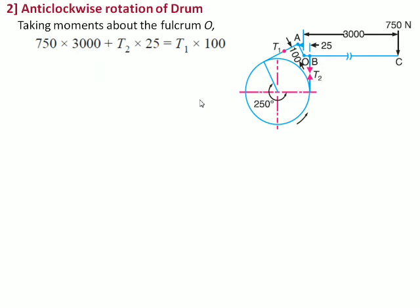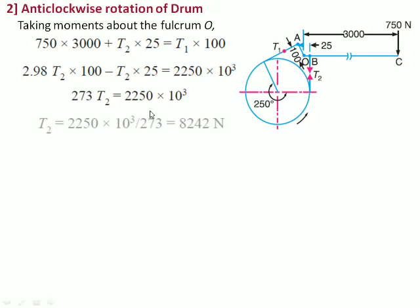So we have set it up here and again instead of T1 we can substitute 2.98 T2. So when we substitute this 2.98 T2 here, we can bring all the T2 terms on one side and numerical terms on the other side to find T2. So finally we get T2 as 8242 newtons. From that we can calculate T1 as 2.98 times T2, as we have done in the previous case.